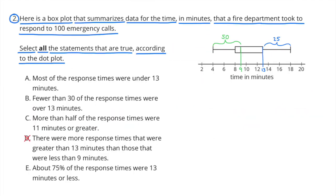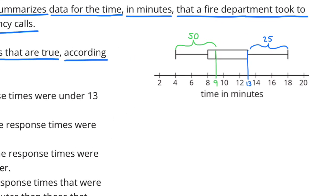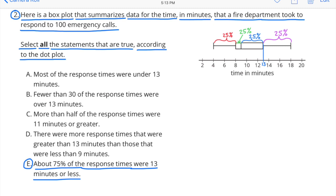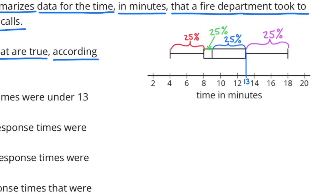Statement D: There were more response times greater than 13 minutes than those less than 9 minutes. That's false, because 50% of the data is less than 9 minutes, and only 25% of the data is greater than 13 minutes. Statement E: About 75% of the response times were 13 minutes or less. That's true, because you can see that about 75% of the data is to the left of 13.